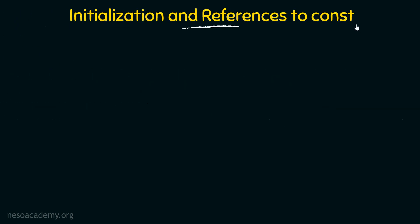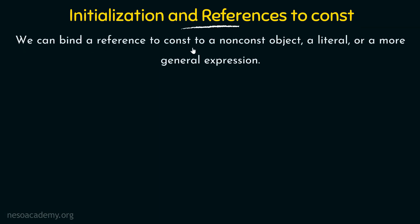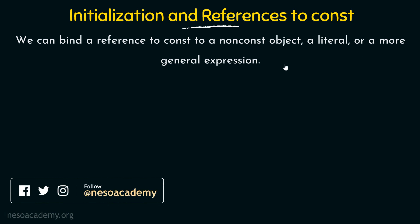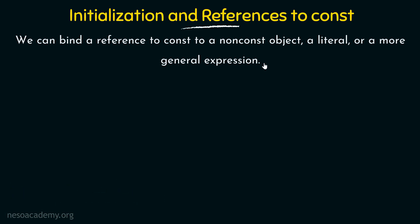Now we will talk about initialization and references to const. We can bind a reference to const to a non-const object, a literal, or a more general expression. This is something that is different between normal references and references to const. Normal references can only be bound to another object of the same type that already exists — not to literals or other things. But in case of references to const, we are able to bind them even to non-const objects, literals, or a more general expression.